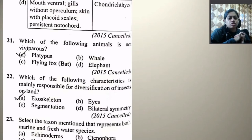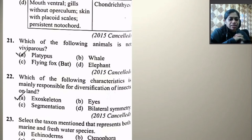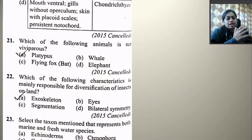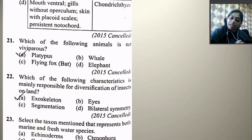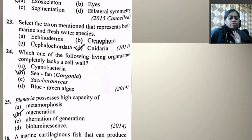Flying fox and elephant are viviparous. Platypus is not viviparous. Next: Which of the following characteristic is mainly responsible for diversification of insects on land — exoskeleton, wings, segmentation, or bilateral symmetry? The important character is exoskeleton, so the right option is A (exoskeleton).